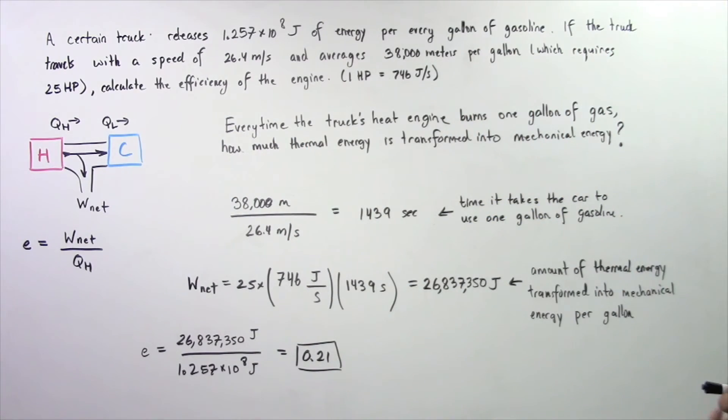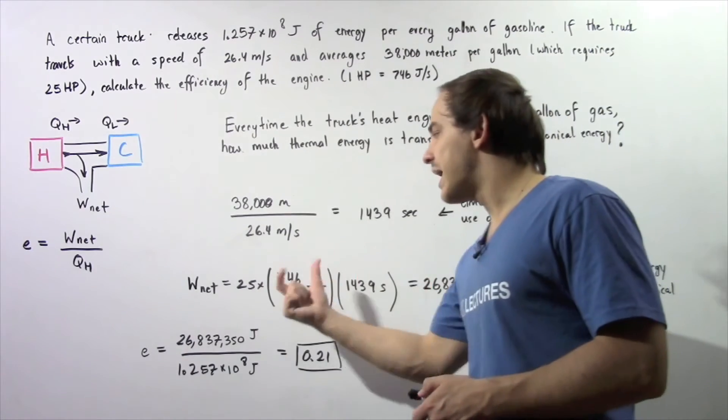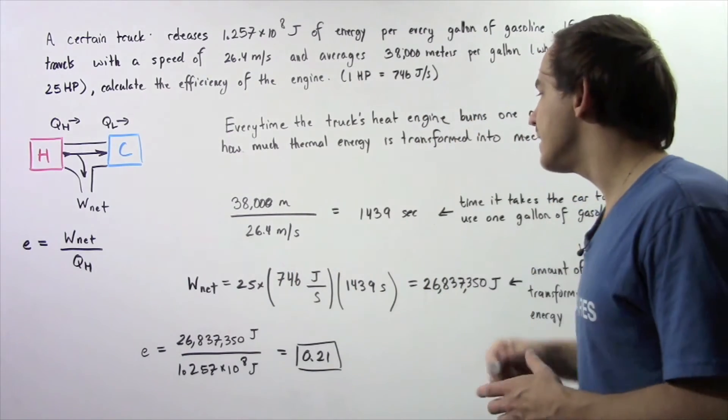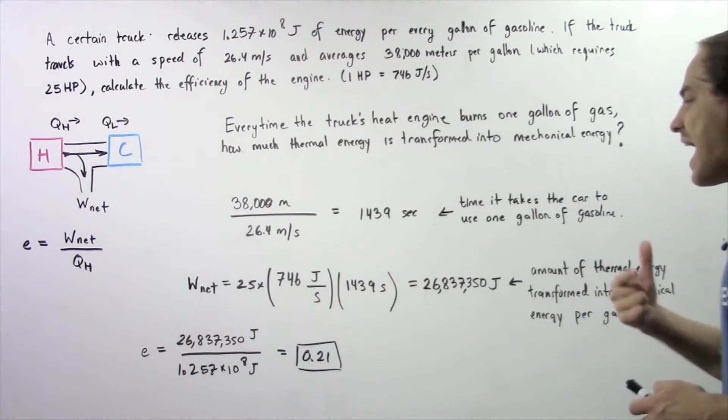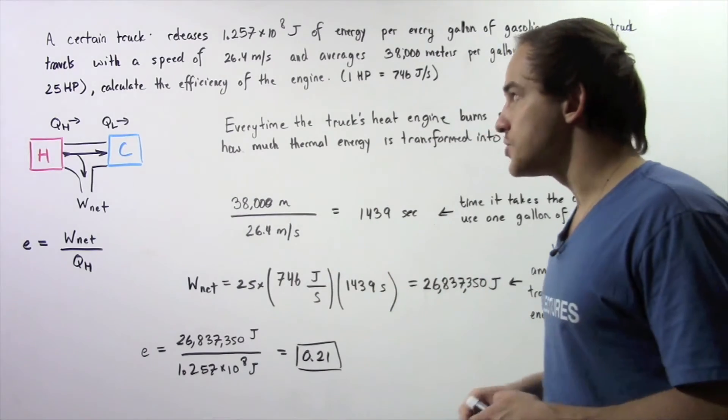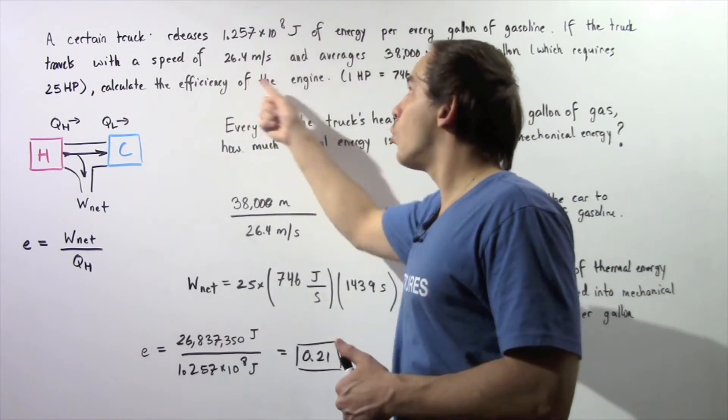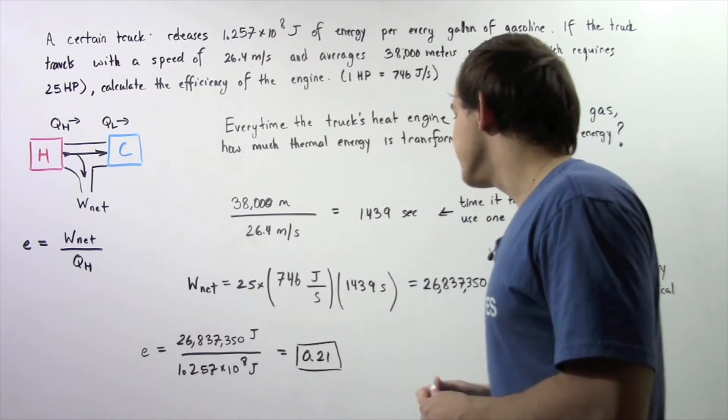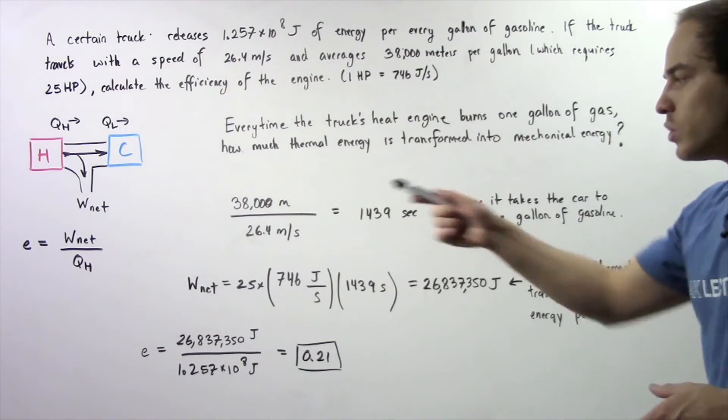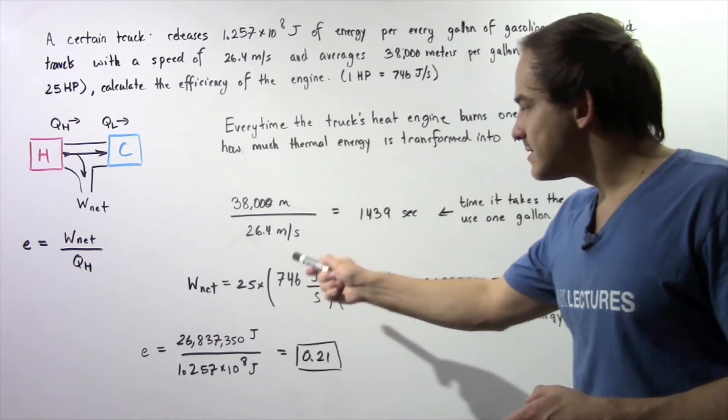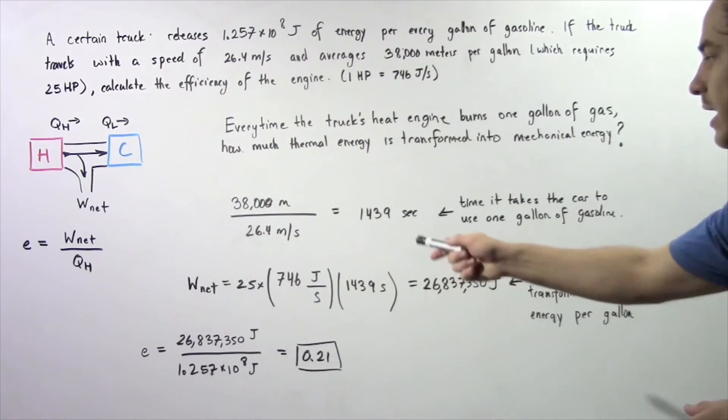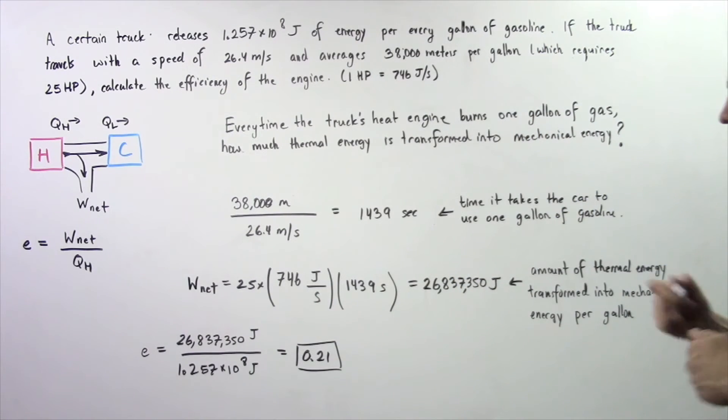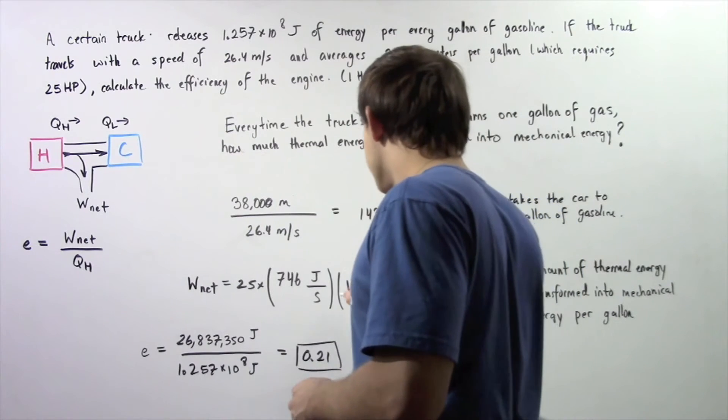And then if we multiply that quantity by the time, that will give us how much work our car does. How much of this quantity of energy is transformed into mechanical energy. So 25 multiplied by 746 multiplied by 1439 seconds. Notice our seconds will cancel.